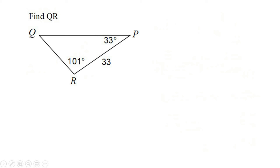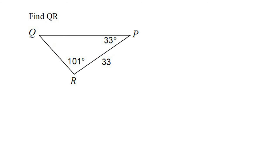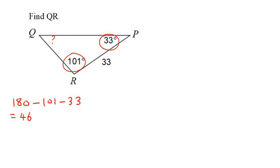Let's do another example. Now they want QR. We don't have an opposite — we have the 33 but we don't have this angle. However, we know the other two angles, so we can easily work out this angle. We could say 180 minus 101 minus 33 — because remember, all the angles in a triangle must always add up to 180. So that would be 46. Angle Q is going to be 46 degrees.